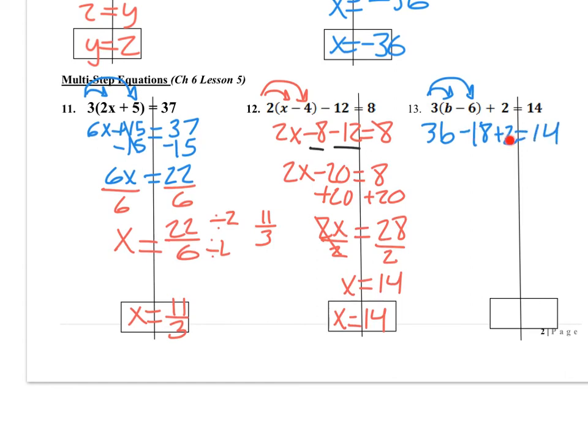Now I have like terms, negative 18 and 2, so I'm going to combine those. 3b still stays, and I have negative 16 equals 14.